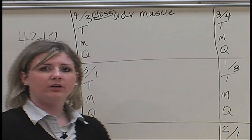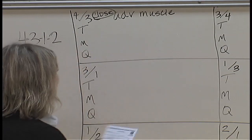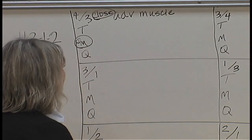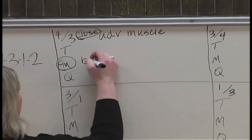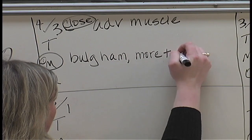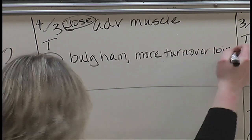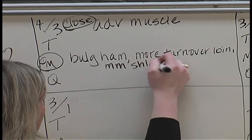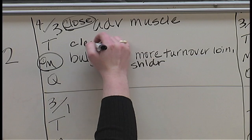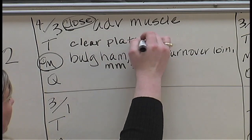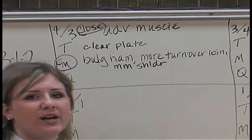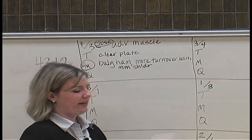Remember that muscling was the biggest thing that placed that pair how it was. So you want to go ahead and put your 1 and circle the M, showing that was the most important thing in that class. As you take your notes, you'll notice that number 4 had a more bulging ham, more turn over the loin, and a more muscular shoulder. Another thing that 4 possessed over 3 was less fat over the clear plate. Those are the only advantages that 4 had over 3, so then you want to move to your grant side and take notes on carcass 3's advantages over 4.